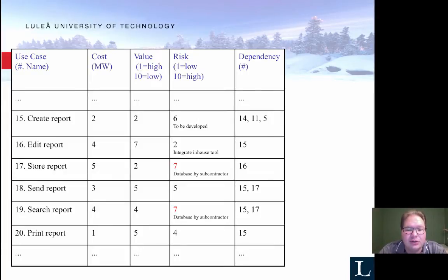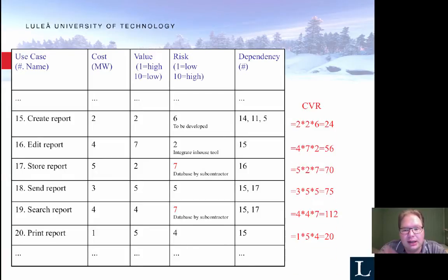Basically, in this case, we assign a number. So cost, we can say that in scale 1 to 10, we estimate it to be cost 2, compared to the other use cases. For value, creating a report might be quite important, so we give that a low number, number 2, and quite a high risk because we haven't developed it yet. And then we list the dependencies. So we calculate this, and come up with a development order. In this case, the lowest number is the one we developed first. So number 15 first, then number 20, etc.